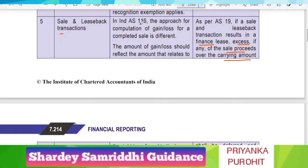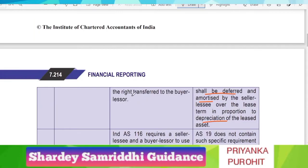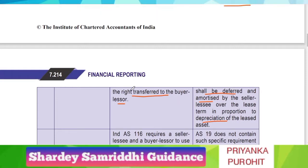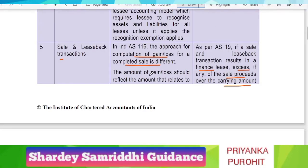When we come to IndAS 116, the approach of computation of gain or loss for a completed sale is different. The amount of gain or loss should reflect the amount that relates to the right transferred to the buyer-lessor. Here we consider the proportion of right which has been given to the buyer. In AS 19 we compute the amount directly by taking the difference between the sale proceeds and carrying amount, but in IndAS 116 it looks more into the substance — the actual rights transferred to the buyer — and by that we determine the amount of gain or loss.